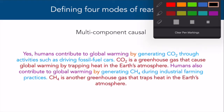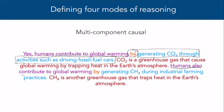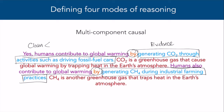The fourth and final mode is called multicomponent causal reasoning. In linear causal reasoning, we're using one piece of evidence to justify a claim. In multicomponent causal reasoning, we're using multiple pieces of evidence to explain the claim. Some may point in the same direction, while sometimes the evidence is competing and needs to be carefully evaluated. Example: yes, humans contribute to global warming by generating CO2 through driving fossil fuel cars. CO2 is a greenhouse gas that traps heat in the Earth's atmosphere. Humans also contribute by generating CH4 (methane) during industrial farming. Methane is another greenhouse gas that traps heat. Here, two chains of linear causal reasoning come together to explain the single claim.